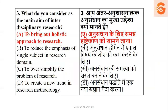Question 3: What do you consider as the main aim of interdisciplinary research? The options are: to bring a holistic approach, to reduce emphasis, to oversimplify the problem, or to create a new trend. If you are conducting interdisciplinary research — using many disciplines — the aim will be to bring a holistic approach, meaning to take everyone together in one single approach. So the right answer is option A.